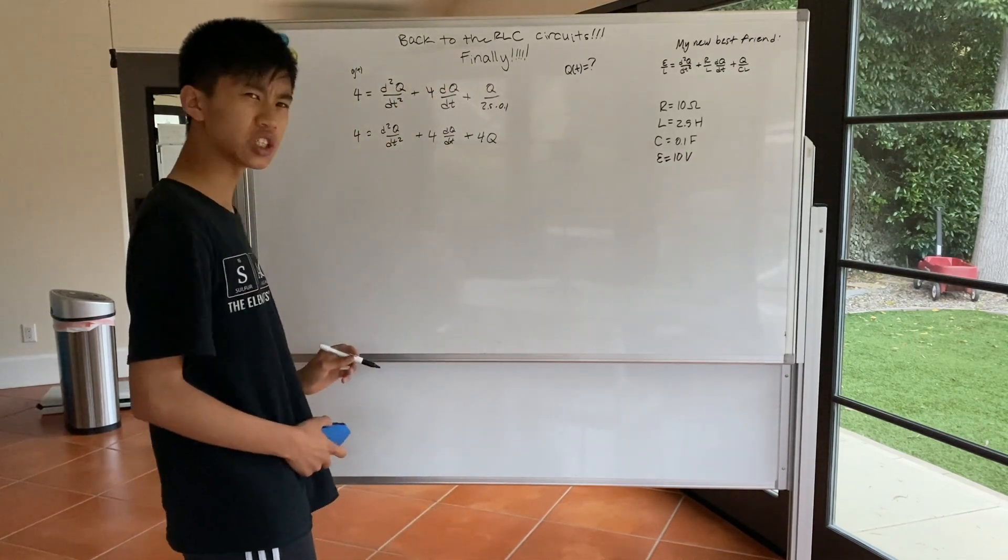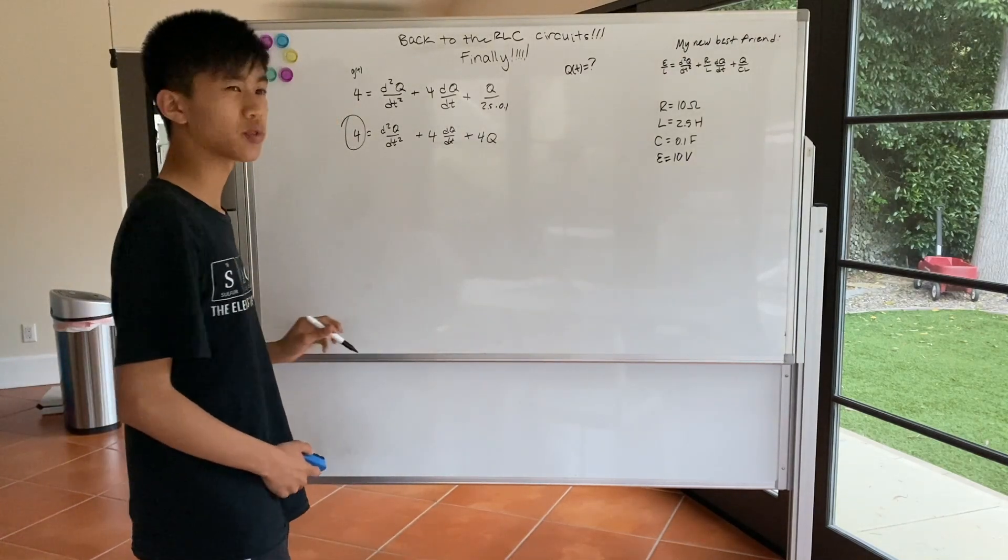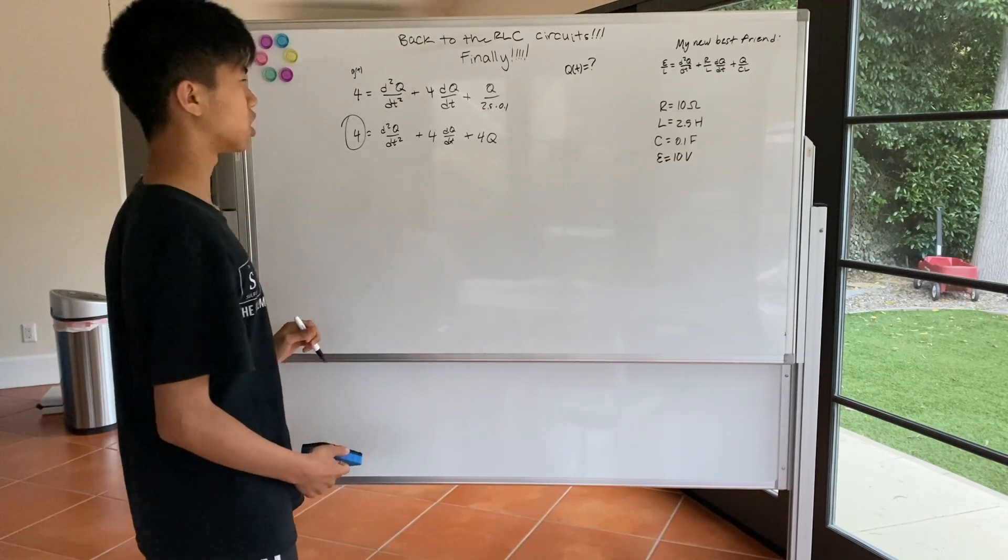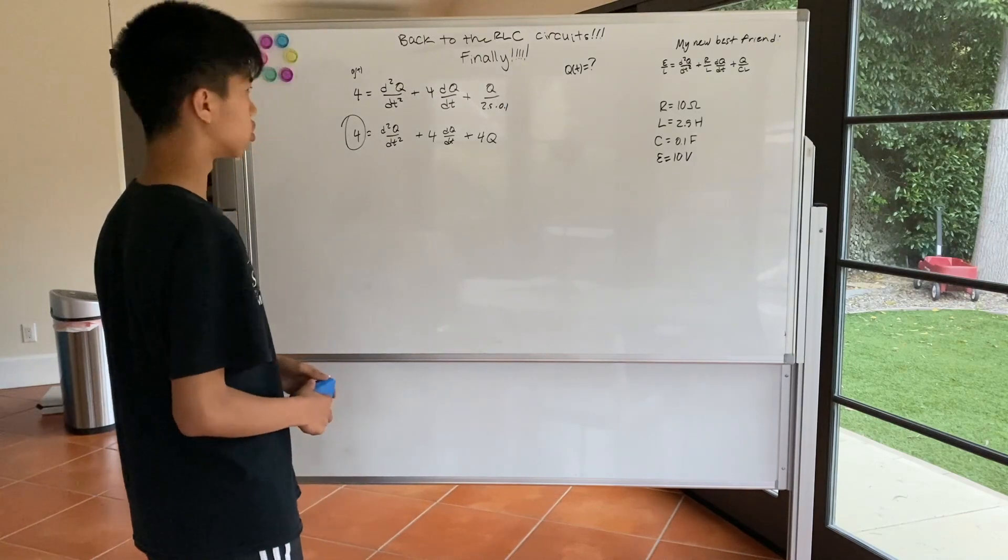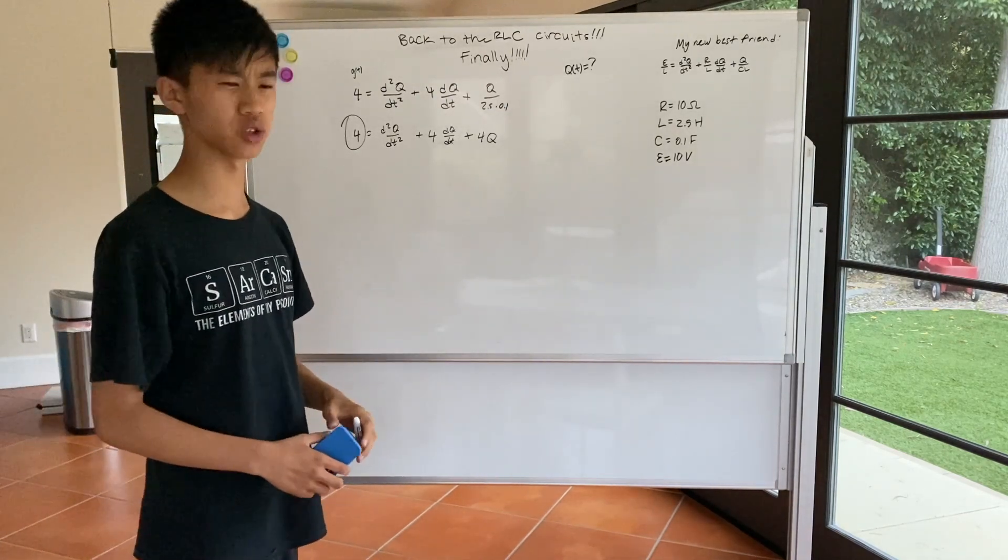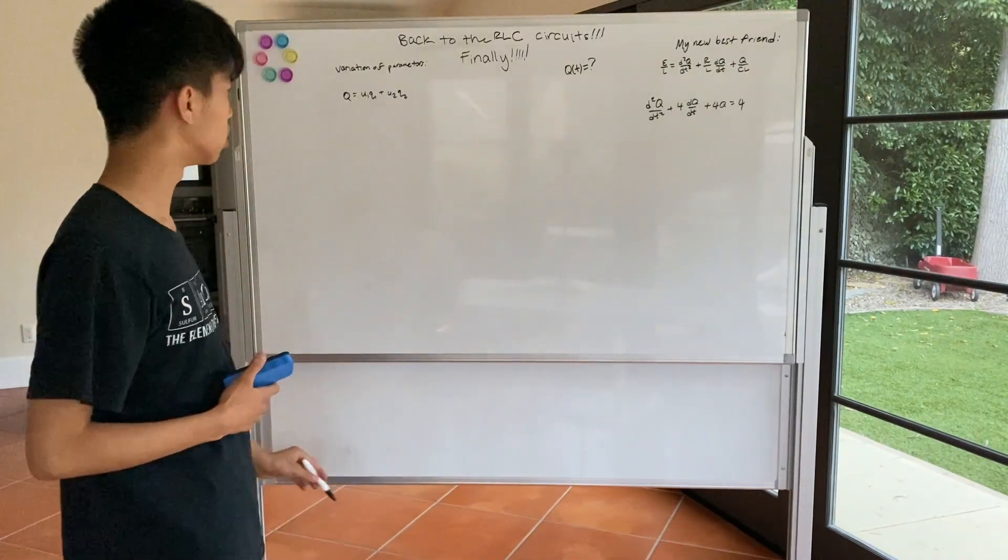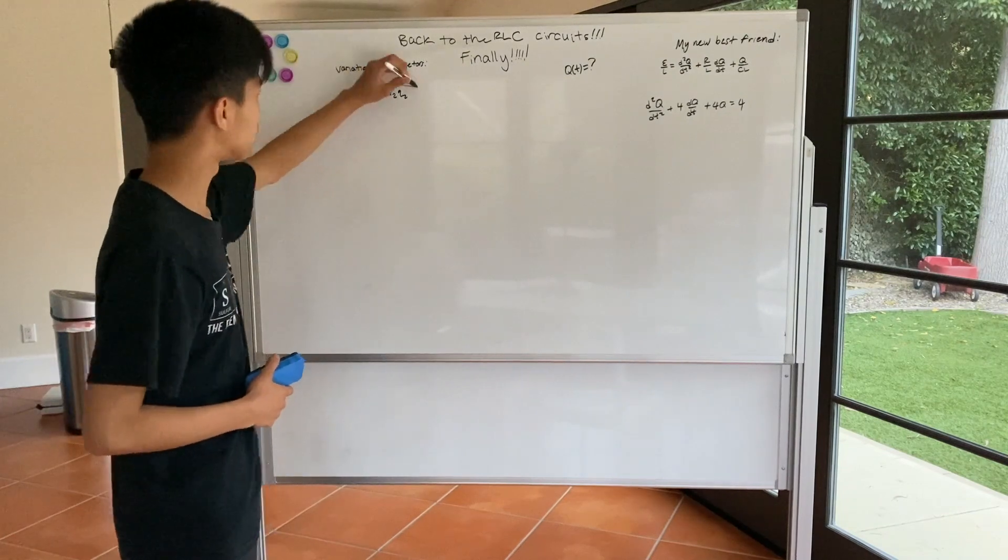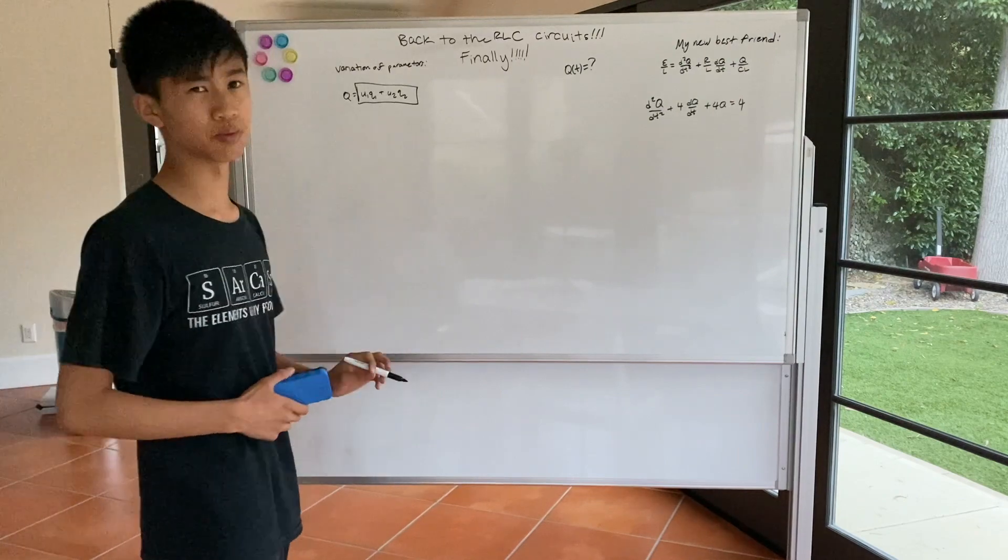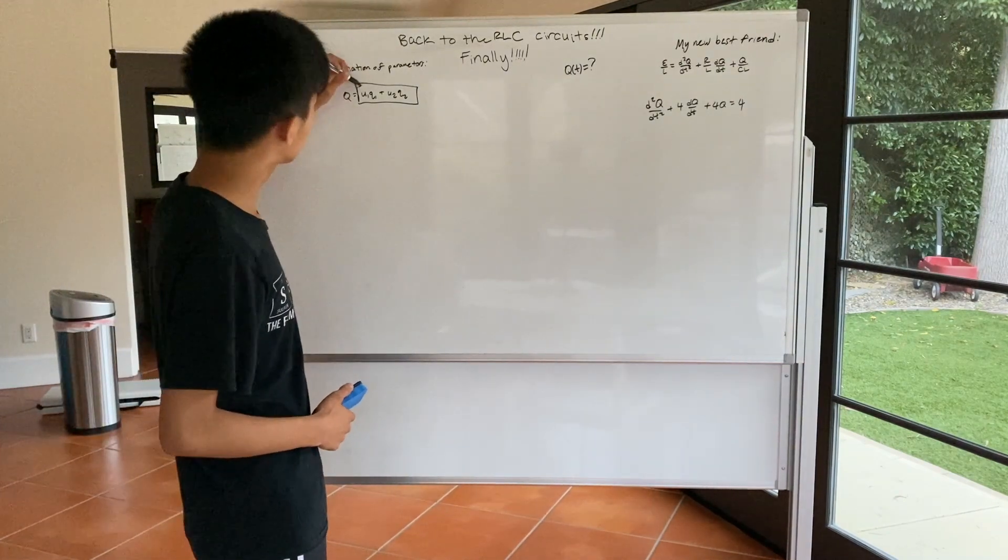And this seems like a really wonky differential equation to solve, considering that the left-hand side is not zero like a homogeneous function that we can easily solve for. So we'll use this technique called the variation of parameters to solve. It involves this thing called the superposition principle, where there are two different solutions, two equations, and we'll just use both of them.